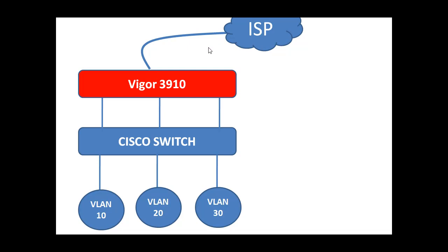What I am trying to show you here: first, I am going to configure the VLANs in my Cisco switch. Then I am going to assign each and every port from the Vigor3910 to different VLANs. One port from Vigor3910 I am going to keep in VLAN 10, another port in VLAN 20, and another in VLAN 30. This is what you can call port-based VLANs. Most of the time we've seen how to integrate Vigor3910 with Vigor switches, but this lab shows integration with third-party switches — like Cisco, HP, D-Link, or Huawei switches.